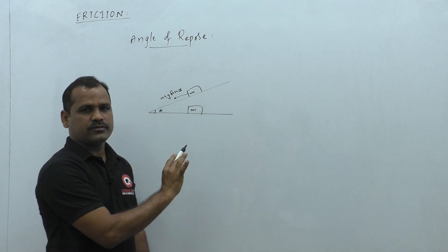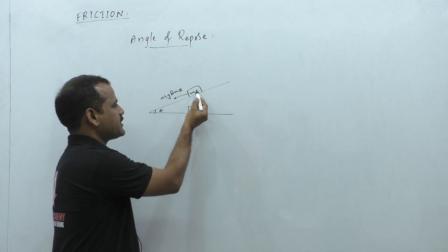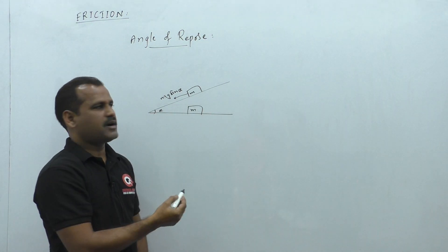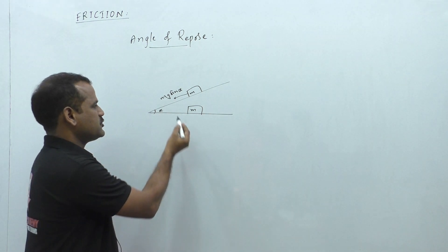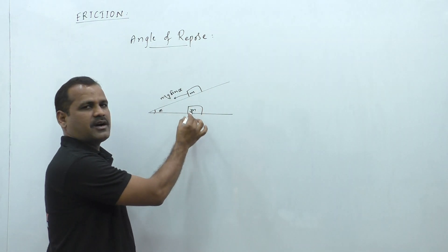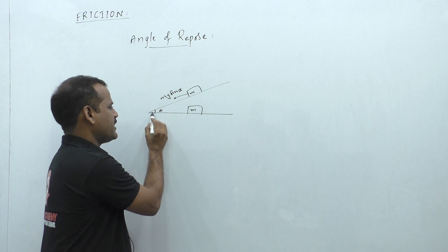Because of this force, this object is tending to move downwards or it may slide down. Assume that this body is at rest or this object is at rest still at this angle.